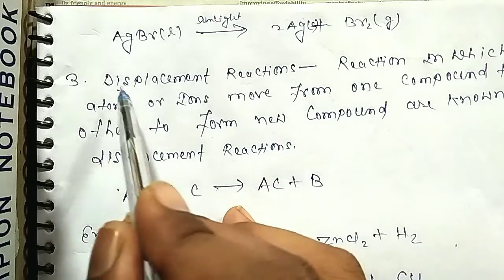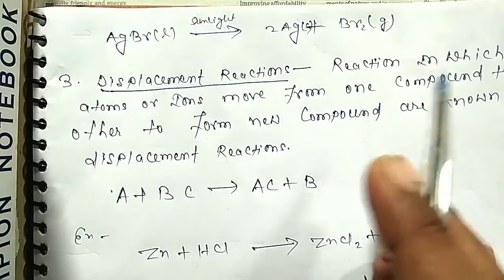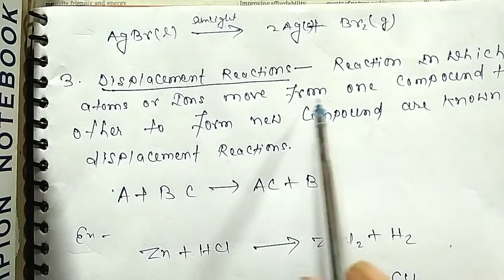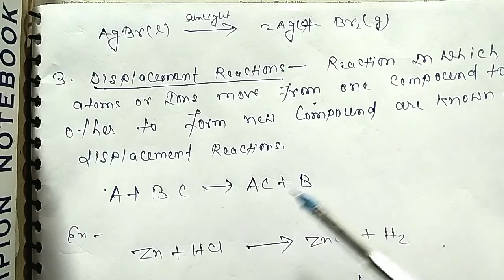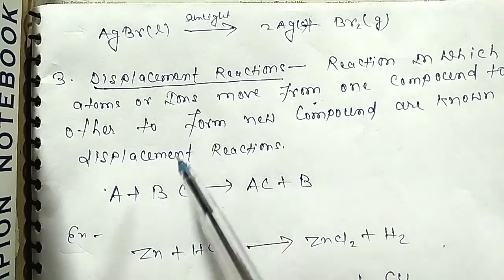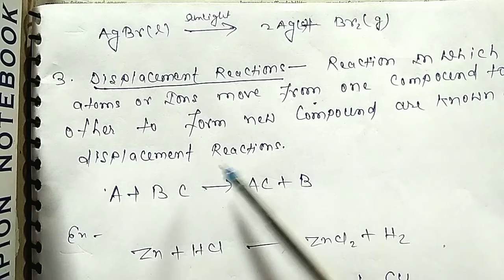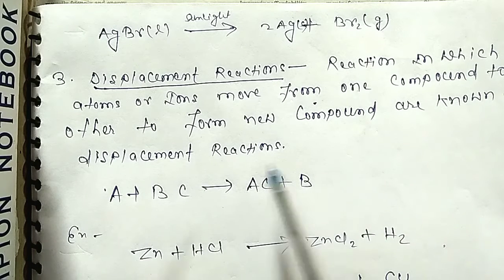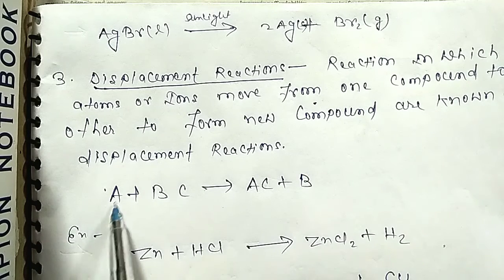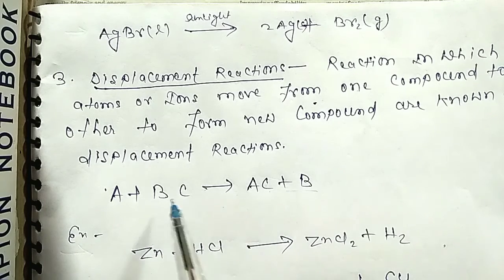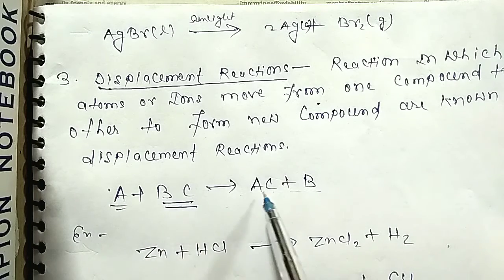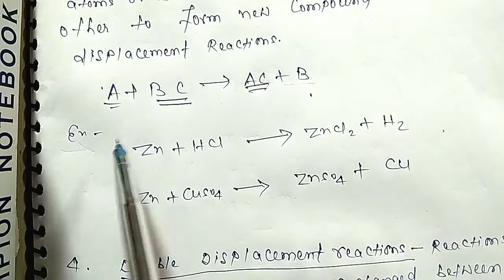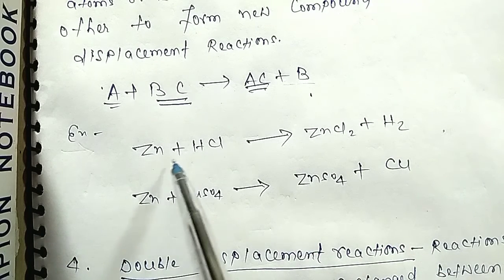Third overall type is displacement reaction: a reaction in which an atom or ion moves from one compound to another compound to form a new compound is known as a displacement reaction. For example, A plus BC gives AC plus B — here BC is a compound and A is the element that displaces B.